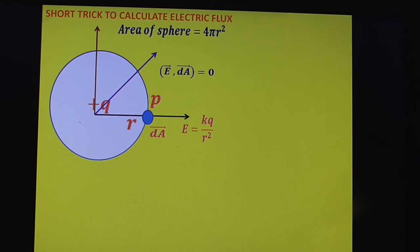So to find this electric flux we have to go for surface integral. Just apply the formula here. Electric flux phi E is equal to integral E bar dot dA bar. Now what is E bar dot dA bar? That is integral E into dA cos 0.